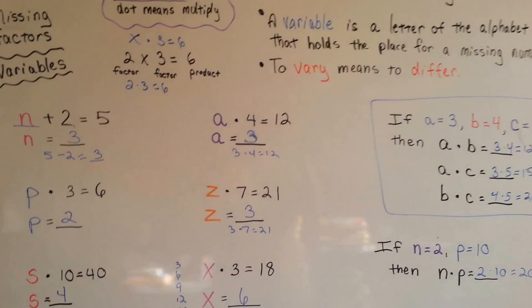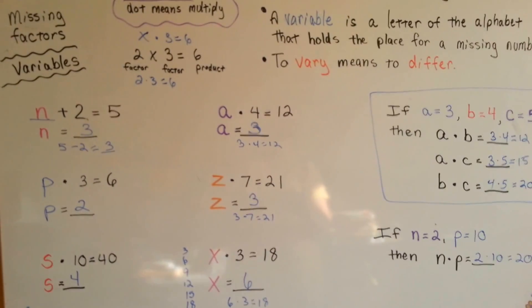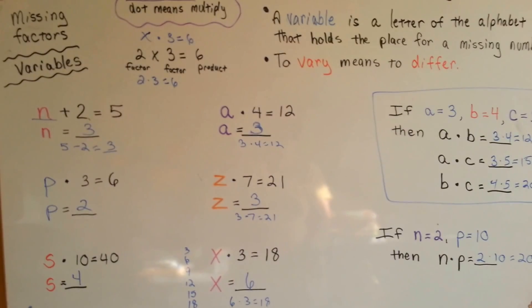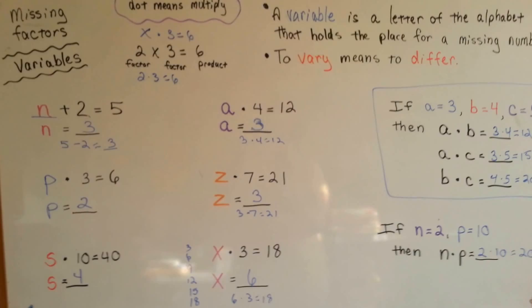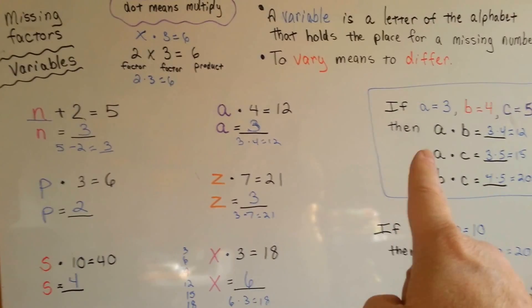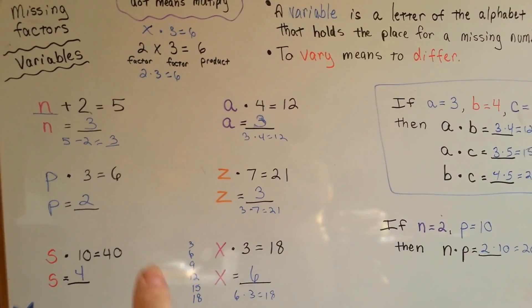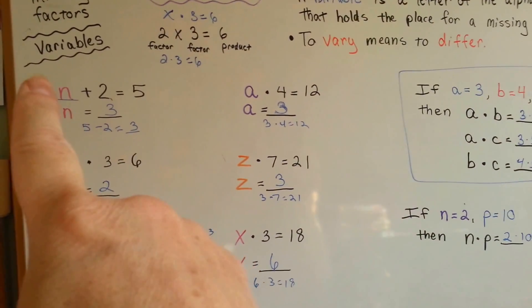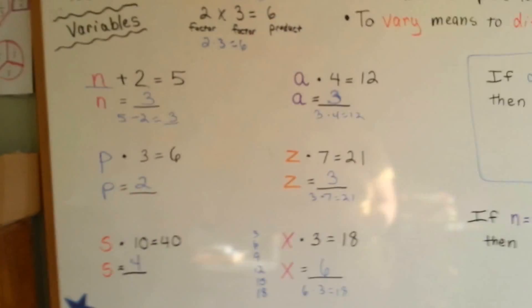See how we did that? So, variables are just letters of the alphabet that are filling a blank space that can help us solve the problem. They vary from problem to problem on what they equal. If a equals 3 here, it's just an accident that it equaled 3 here. But do you see how n equaled 3 over here, but over here it equaled 2? So, it can vary from problem to problem.